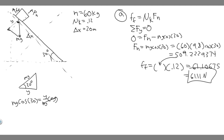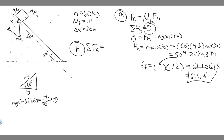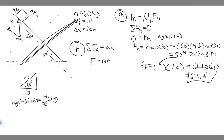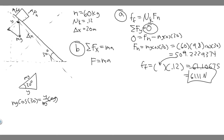Now let's move on to Part B — finding the acceleration. We take the sum of the forces in the x-direction, which equals MA (not zero, because the student is accelerating along the incline). In the y-direction the sum was zero because there was no motion there, meaning velocity and acceleration are both zero in that direction. So: MA = sum of forces in x.